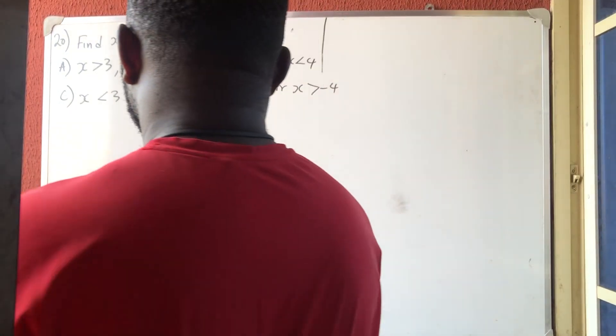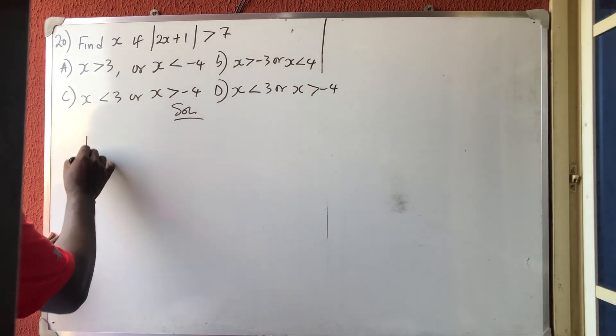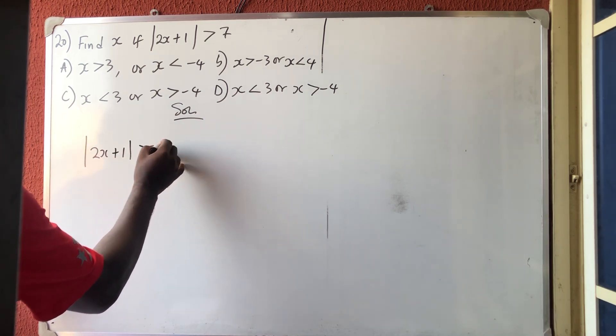Okay, let's solve this simple math problem. They said that the absolute value of 2x plus 1 is greater than 7.